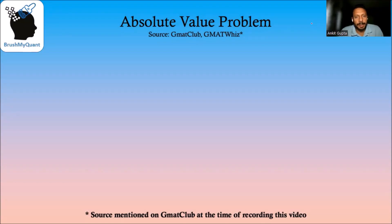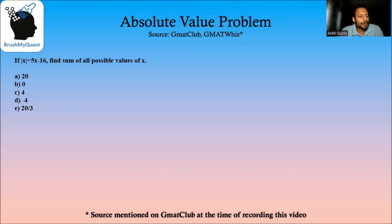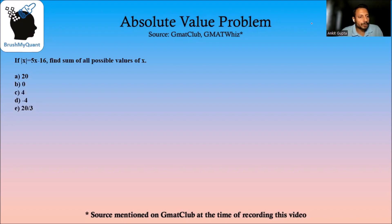Hi, we'll be solving an absolute value problem today. If mod of x is equal to 5x minus 16, find the sum of all possible values of x. Let's try and solve this problem using two methods.